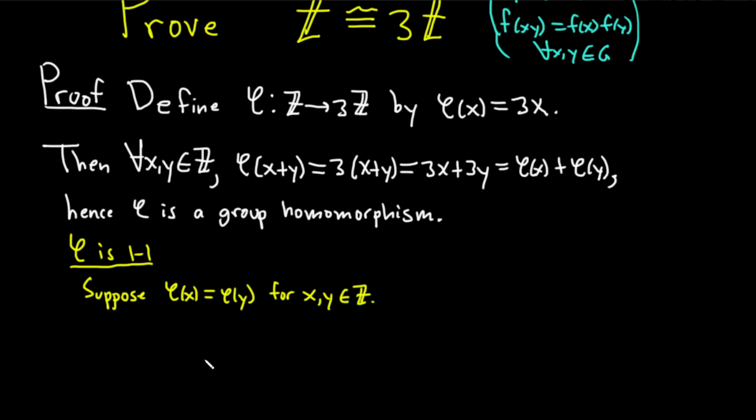We have to show that x is equal to y. Well, phi of x is just going to be 3x, and phi of y is just 3y. So x is equal to y. That shows it's one-to-one.